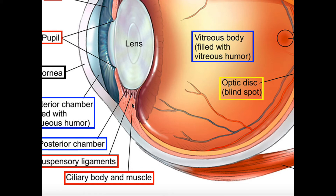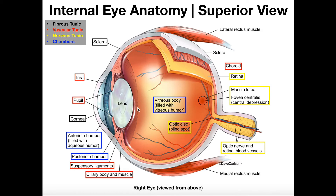The ciliary body can contract and relax. If it contracts, it will pull away from the lens, which pulls the suspensory ligaments — in this case downward — and elongates the lens. Or when it relaxes, it goes the opposite direction, forcing the lens to bulge inward. So this changes the shape of the lens, and collectively the ciliary body and the suspensory ligaments can change the shape of the lens so you can focus light differently at the back of the eye.